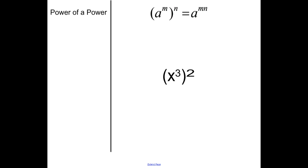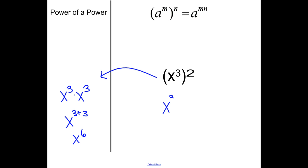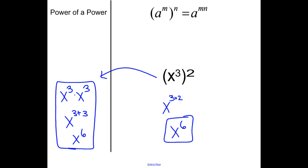Now power to a power: when I have a to the m, raised to the nth, I'm going to multiply them. So x to the 3rd to the 2nd — I'll show you why this works — is really x to the 3rd times x to the 3rd, because squared means multiply by itself. Going back to product of powers, you add those: x to the 3 plus 3, which equals x to the 6th. With power of a power, you just multiply 3 times 2 to get x to the 6th directly.